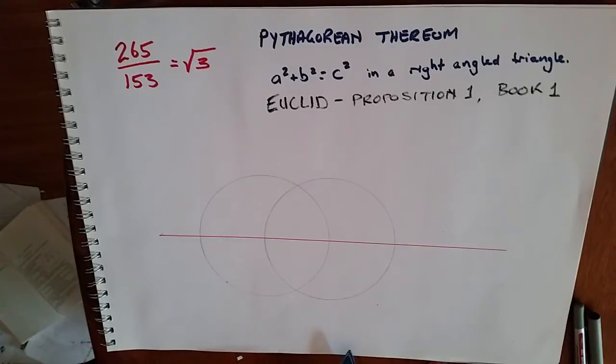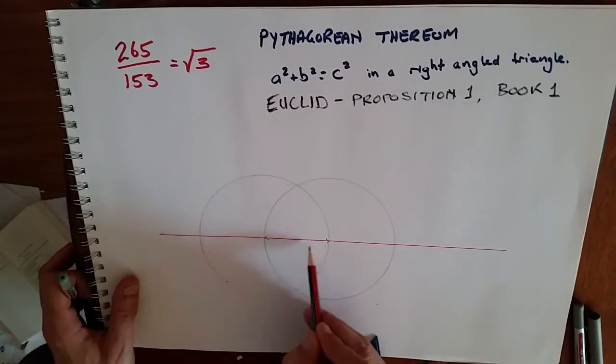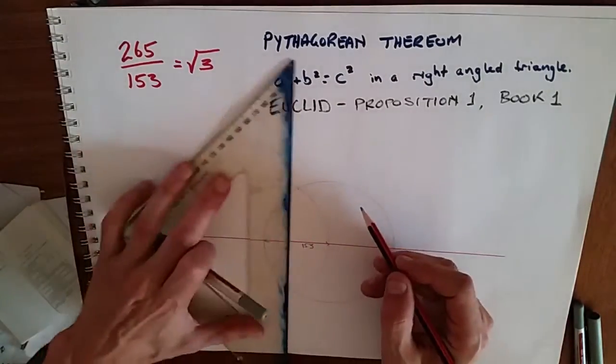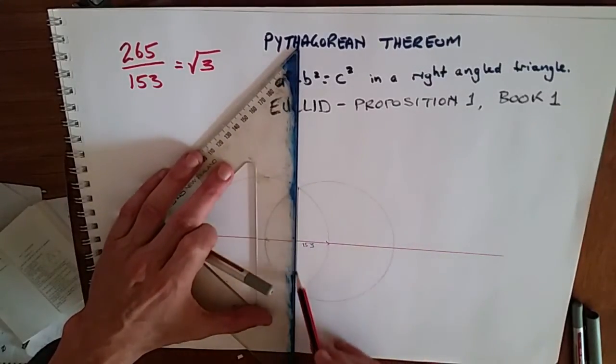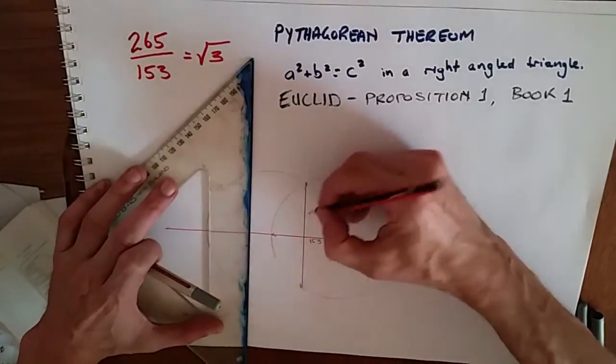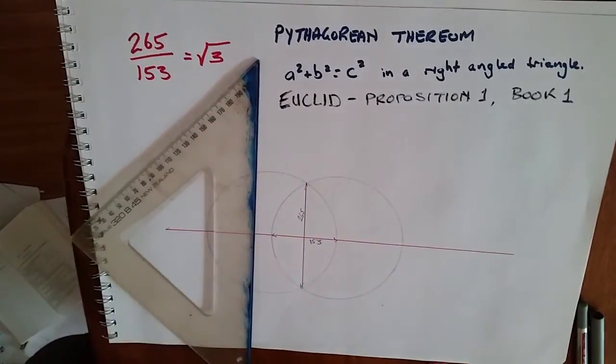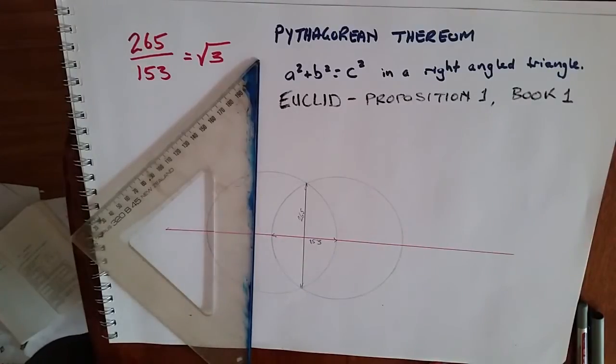Now what they mean by that is generally the claim is that if this is 153, that these two points in ratio will be 265. Okay, so that's the claim we're going to test: 265 over 153 being the square root of three.